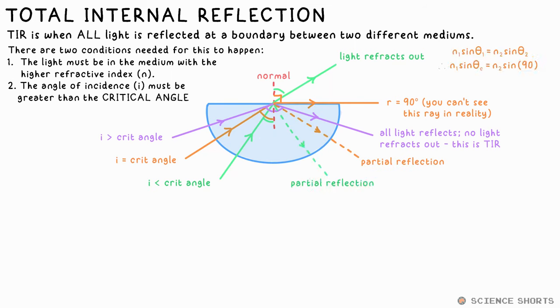Want to calculate the critical angle? Well, you can start with Snell's Law. You call theta 1 theta c instead, make N2 90 degrees, and we end up with sine theta c equals N2 over N1.